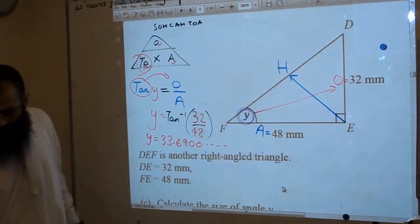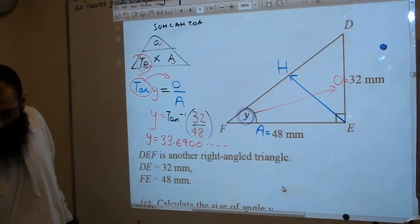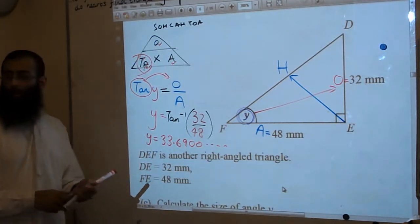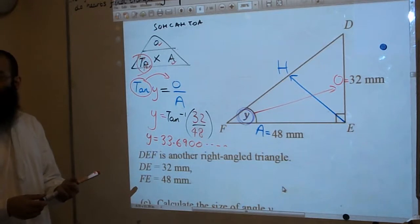Now the question says here, if I look at the written paper, give your answer correct to 1 decimal place. Okay, now 1 decimal place, let's have a look.